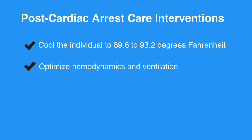To optimize hemodynamics and ventilation, 100% oxygen is acceptable for early intervention but not for extended periods of time. Oxygen should be titrated so that the individual's pulse oximetry is greater than 94% to avoid oxygen toxicity. Be sure not to overventilate in order to avoid potential adverse hemodynamic effects. Keep ventilation rates at 10 to 12 breaths per minute to achieve ECO2 at 35 to 40 millimeters of mercury. IV fluids and vasoactive medications should be titrated for hemodynamic stability.